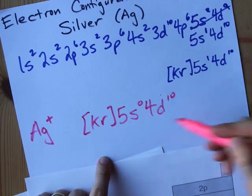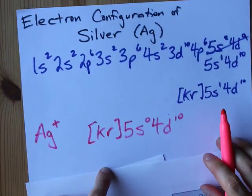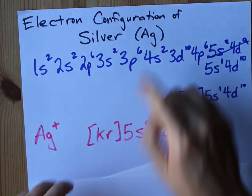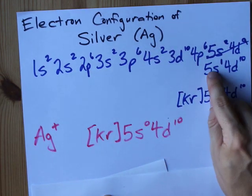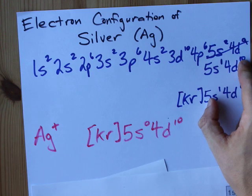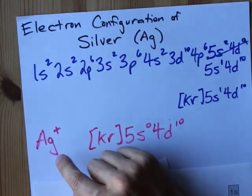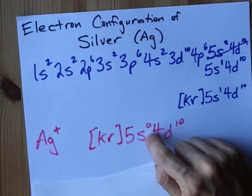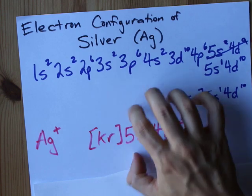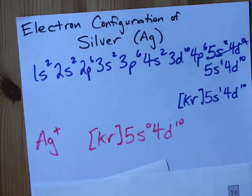There you go. One less electron, a positive 1 charge. Electron configuration for silver neutral is s1d10. And the electron configuration for silver with a plus 1 charge is s0d10. Got it? Got it. Okay. Best of luck to you.